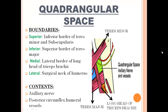The quadrangular space has four boundaries. Superior: inferior border of teres minor behind and subscapularis in front. Inferior: superior border of teres major. Medial: lateral border of long head of triceps brachii. Lateral: surgical neck of humerus. Contents: axillary nerve and posterior circumflex humeral vessels. Teres minor forms the superior boundary, teres major the inferior boundary, surgical neck of humerus the lateral boundary, and long head of triceps brachii the medial boundary.